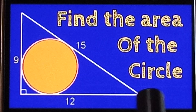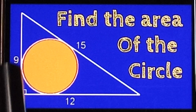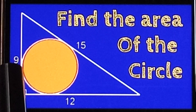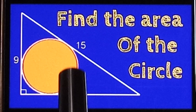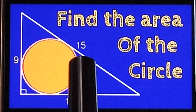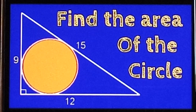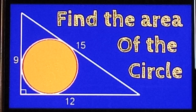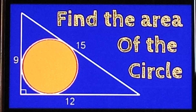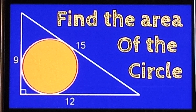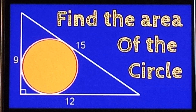Find the area of the incircle of the right angle triangle whose sides are 9 units, 12 units, and 15 units. First, we draw a diagram, then we try to find out the area of the circular region.